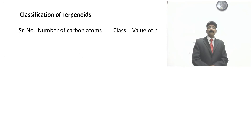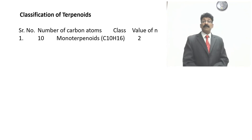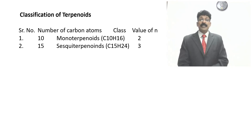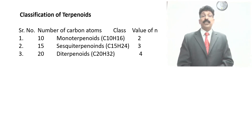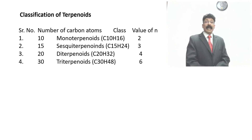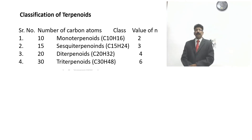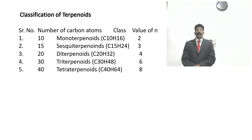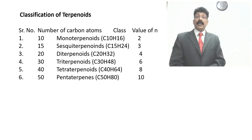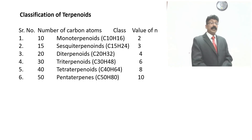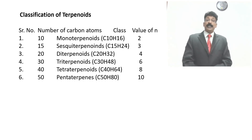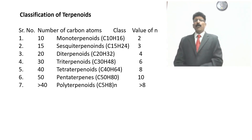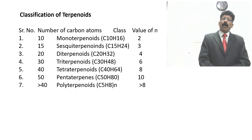Classification of terpenes: 10 carbon atoms with 2 isoprene units = monoterpene; 15 carbons with 3 isoprene units = sesquiterpene; 20 carbons with 4 isoprene units = diterpene; 30 carbons with 6 isoprene units = triterpene; 40 carbons with 8 isoprene units = tetraterpenoids; 50 carbons with 10 isoprene units = pentaterpene. More than 40 carbon atoms or more than 8 isoprene units are said to be polyterpenoids.